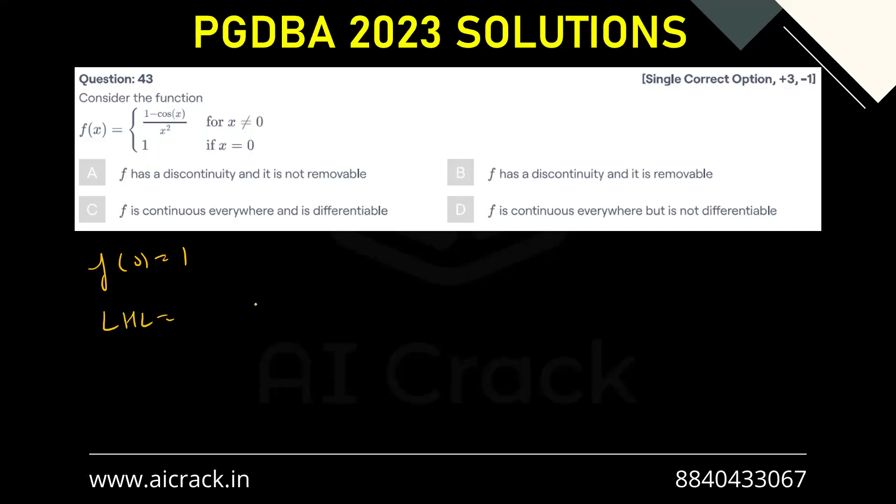If you talk about LHL here, that would be limit h approaches zero, or you can say f(0⁻) equals limit h approaches zero, (1 - cos(0-h))/(0-h)². Now we know that cos(-h) would be cos(h) only, so this is (1 - cos h)/h².